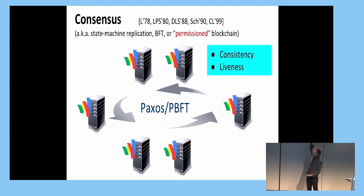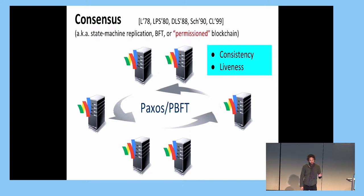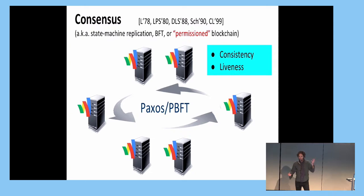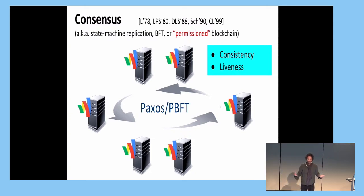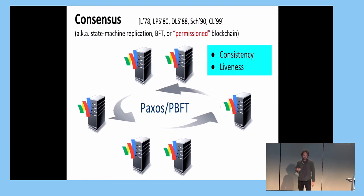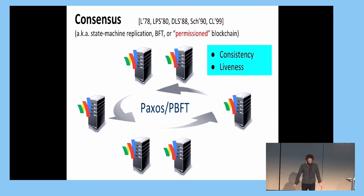What do we mean for these nodes to agree on these transactions? Typically we require two properties. The first one is consistency, which roughly speaking says that if you take any two nodes, the view of transactions they have should be the same. The second property is liveness, which roughly speaking says that whenever a node wants to add a transaction, it should get incorporated in everybody's view sufficiently fast.